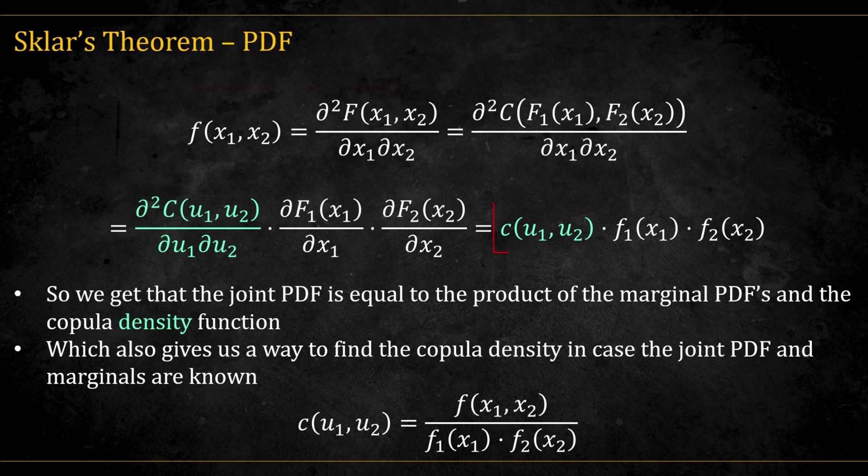If we follow the basic calculus, we get that this is equal to this. That is, the joint PDF is equal to the product of the copula density function and the marginal PDFs.